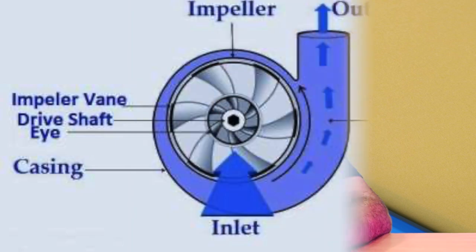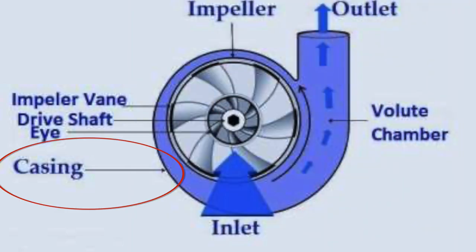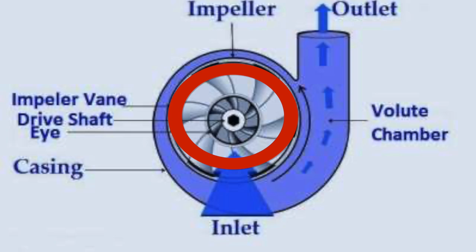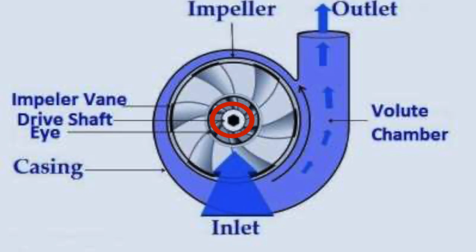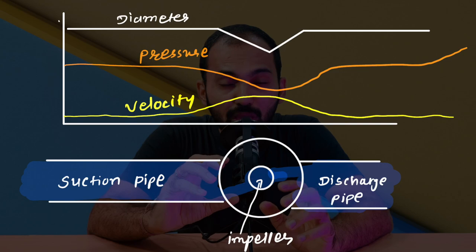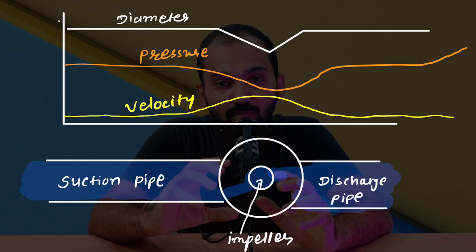Now let's discuss centrifugal pump construction. As you can see in the image, there is a casing with impeller vanes rotating inside. In the middle we have the impeller eye, and at the outlet there is a volute chamber. Fluid comes through the suction pipe, enters the impeller eye, and is pushed through the volute chamber to the outlet. Note that the suction pipe diameter is larger than the diameter of the impeller eye.